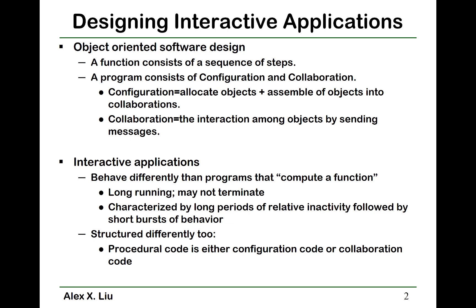Configuration means that we allocate objects and then assemble the objects into collaborations. Collaboration means the interaction among the objects by sending messages back and forth so that all these objects work together to achieve some goals.